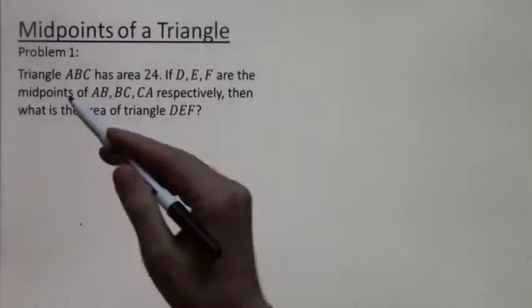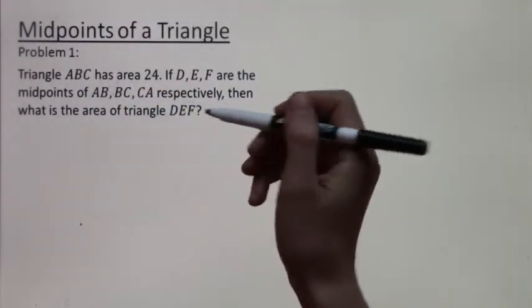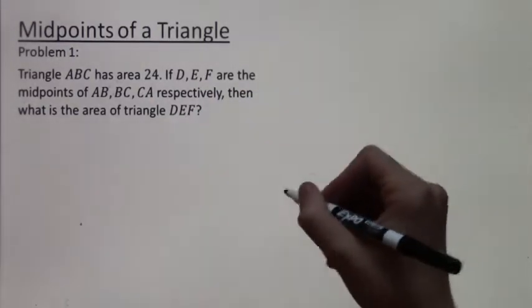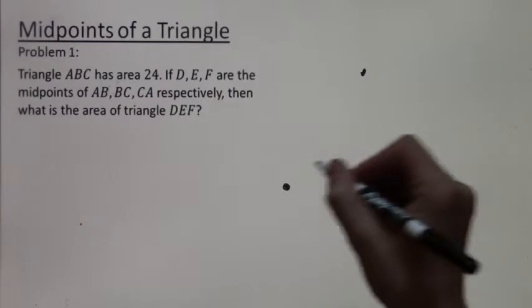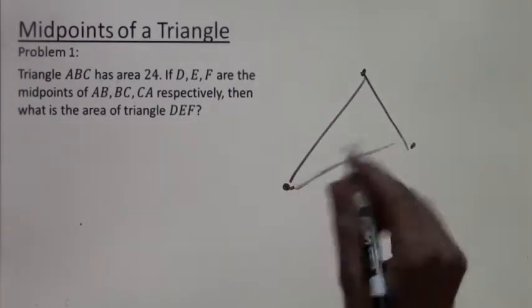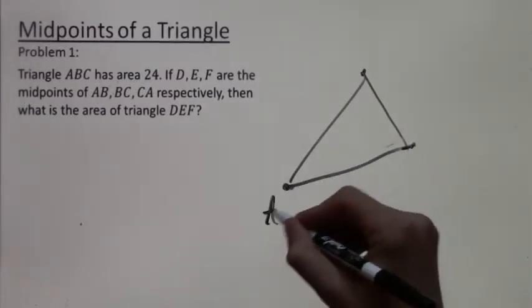Triangle ABC has area 24. If D, E, F are the midpoints of AB, BC, and CA, then what is the area of triangle DEF? So, of course, first we want a drawing. So let's say this is triangle ABC. And I'm going to label ABC.